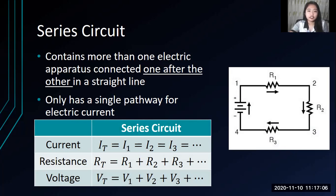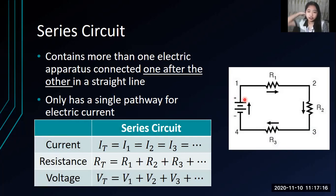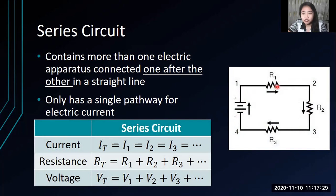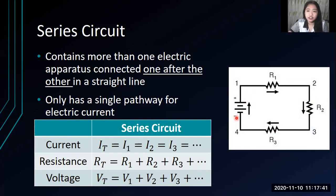As you can see, there is only one pathway. Using conventional current, we start from the positive terminal. The current goes in one pathway — from the battery, then through resistor one, resistor two, and resistor three. That squiggly line is the symbol for a resistor. You can look at your textbook for the other electrical symbols used in circuit diagramming.